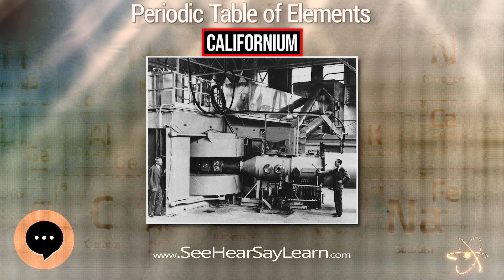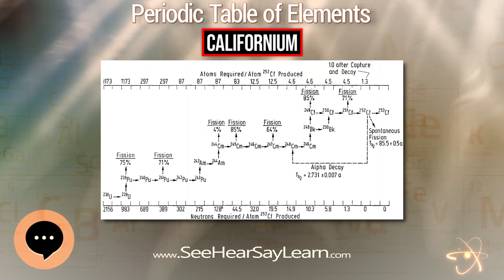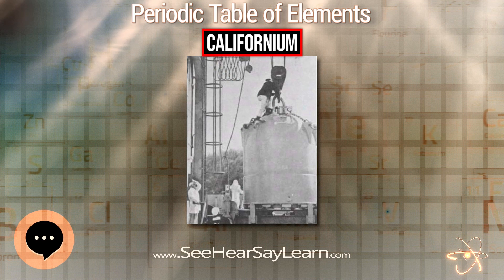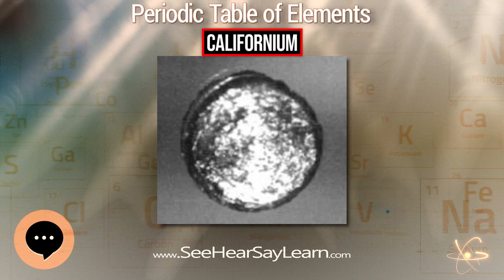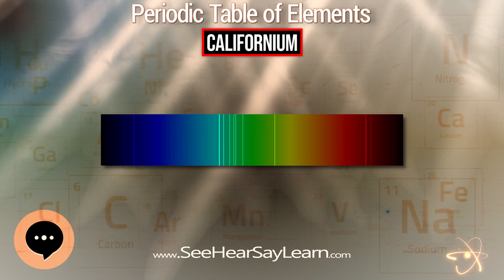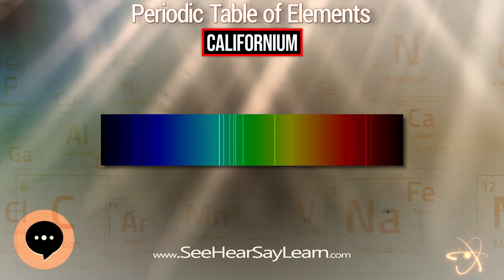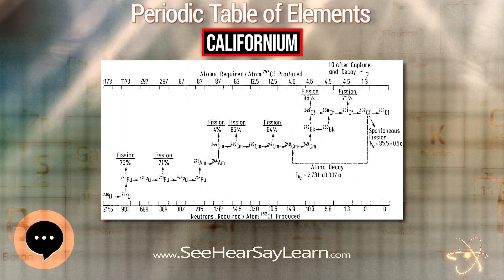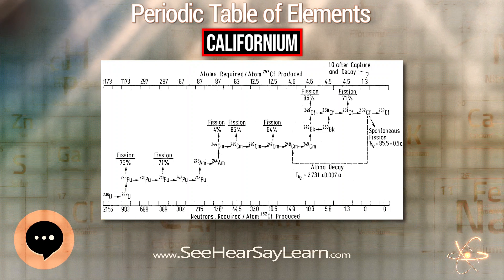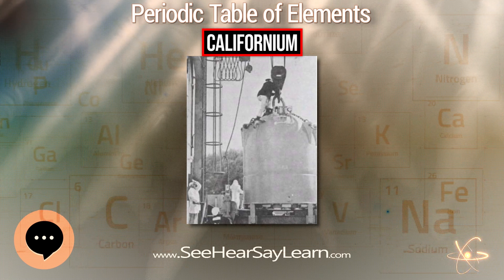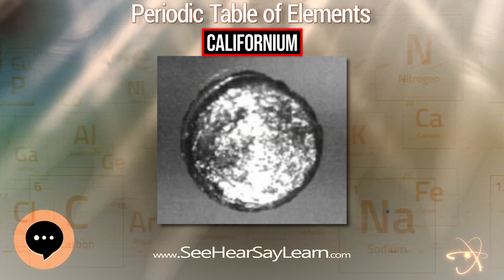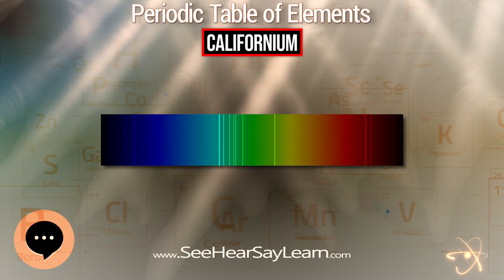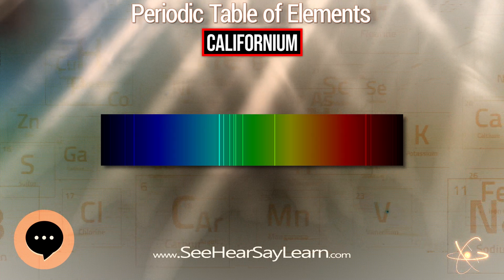Between 48 and 66 K californium is antiferromagnetic, and above 160 K it is paramagnetic. It forms alloys with lanthanide metals, though little is known about them. The element has two crystalline forms under one standard atmosphere: a double hexagonal close-packed form (alpha) and a face-centered cubic form (beta). The alpha form exists below 600–800 degrees C with a density of 15.10 g/cm³, and the beta form exists above 600–800 degrees C with a density of 8.74 g/cm³. At 48 GPa, the beta form changes into an orthorhombic crystal system due to delocalization of the atom's 5f electrons.